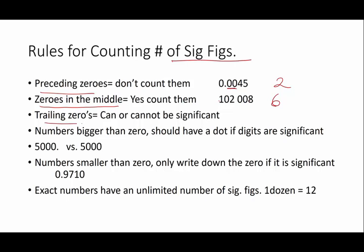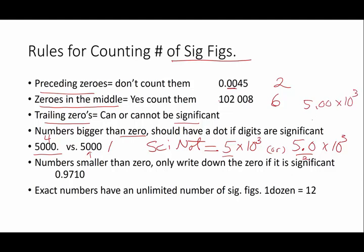Trailing zeros, the ones trailing meaning at the back end, can or cannot be significant. But how do you tell? Well, if you have numbers that are bigger than zero, there should be a dot after the number to indicate it's significant. So 5,000 dot means I have four significant figures. If I just have 5,000, no dot, how many significant figures do I have? One. Well, what if one of these is significant and the others are not? That's why scientific notation was invented. In scientific notation, I could write this number 5 times 10 to the third if I have one sig fig, or I could write it as 5.0 times 10 to the third if I have two sig figs, or 5.00 times 10 to the third if I have three sig figs. When in doubt, in a situation like this, where there's any ambiguity, there's any confusion, scientific notation will save your bacon.